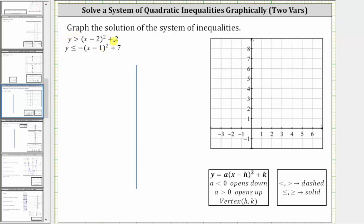Looking at the first inequality, because the inequality is greater than — not greater than or equal to — the graph of the parabola will be dashed. And for the second inequality, because the inequality is less than or equal to, because of the equal part, we will have a solid parabola.